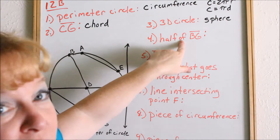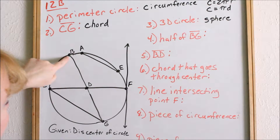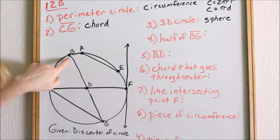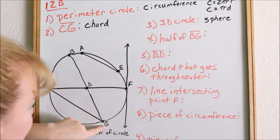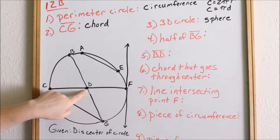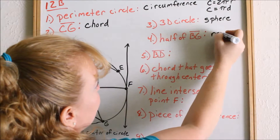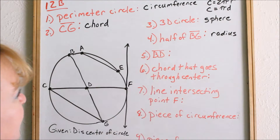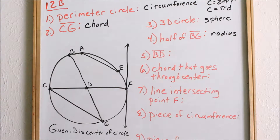Number four: we want half the length of line segment BG. Line segment BG goes all the way from one side of the circle to the other side and goes through the center. Anytime you have a chord that goes to the center of the circle, that is called the diameter. The diameter goes all the way from one side of the circle to the other through the center. Diameter is just a special chord. We want half of BG, which is the diameter — half of the diameter is called the radius. The radius goes from the center of the circle to the outside. Line segment BD, from the center to the outside, is the radius. Anything from the center of the circle to the outside is called the radius.